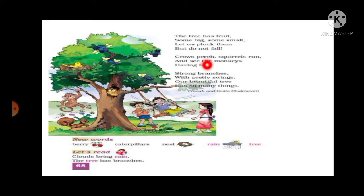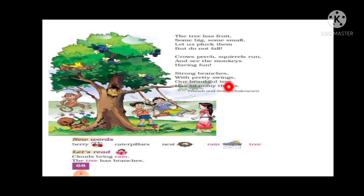The next stanza: 'Cross perch, squirrels run and see the monkeys having fun.' It is sitting on one of the branches of the tree — all are depending on the tree. Now let's see the last stanza: 'Strong branches with pretty swings, our beautiful tree has so many things.'